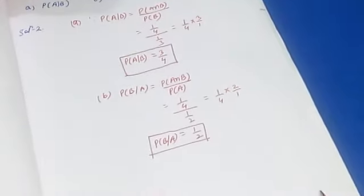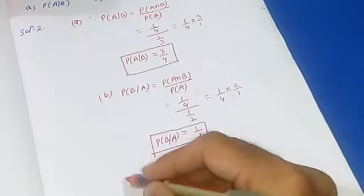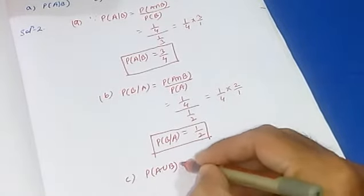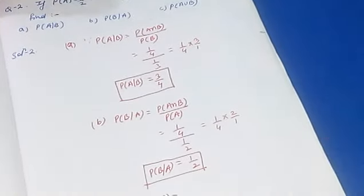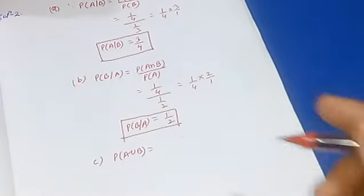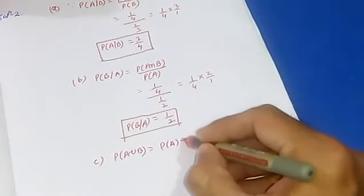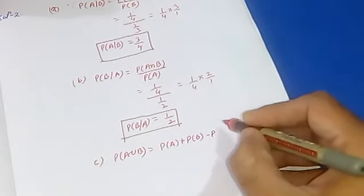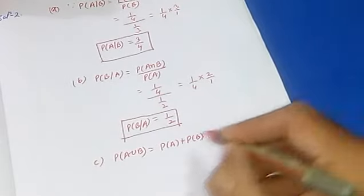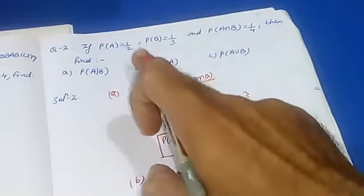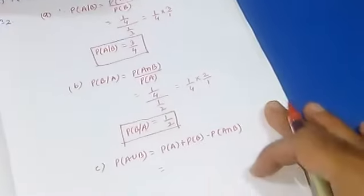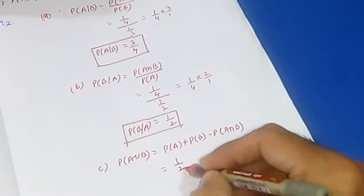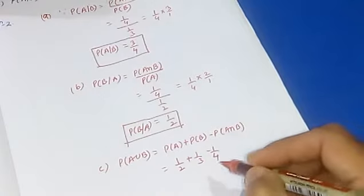Now we have to find probability of A union B. Since A and B are not mentioned as mutually exclusive events, we apply the addition theorem for probability of any events. Probability of A union B equals probability of A plus probability of B minus probability of A intersection B. Probability of A is 1 by 2, probability of B is 1 by 3, and probability of A intersection B is 1 by 4. So we get 1 by 2 plus 1 by 3 minus 1 by 4.